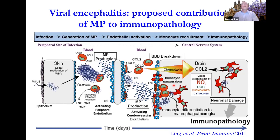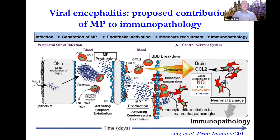Just one slide on viral encephalitis: in the West Nile virus model with Nick King and Zeng Lin, we showed that microparticles carry viral antigens from the very beginning when the virus is injected in the skin by the vector, and participate in the migration of inflammatory cells into the central nervous system, resulting in neuronal damage characteristic of viral encephalitis.